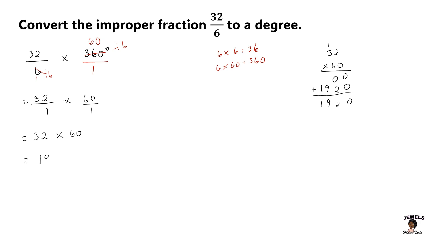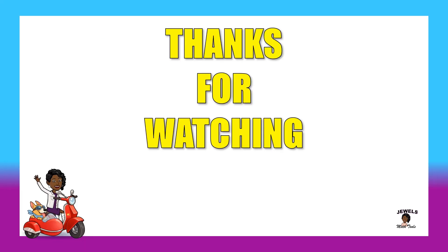So 32/6, when converted into degrees, is 1920 degrees. Okay, so that's it! We just converted our improper fraction into degrees by simplifying first. Remember that this process is very easy. Make sure you get some additional practice in, and we'll see you in the next video on Jewel's Math Tools, where we aim to make math easy.